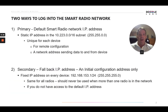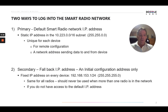The secondary or fallback IP address is really for initial configuration only. It's a fixed address — the same on every device — and it's 192.168.153.1 on a /24 subnet. Since it's the same on all radios, you want to make sure that the radio you're logging into is the only radio on the network, or you'll have an IP address conflict. Use it if you don't have access to the default IP, or maybe it's your first time into the radio and someone else might have changed the primary address.